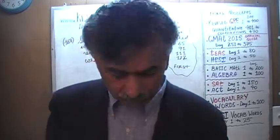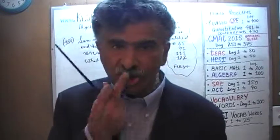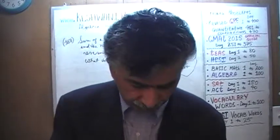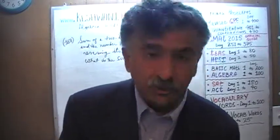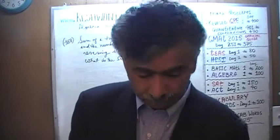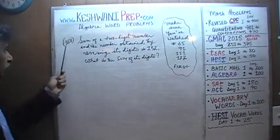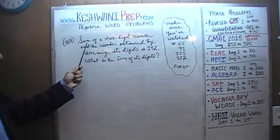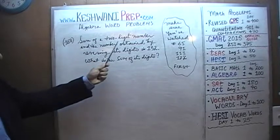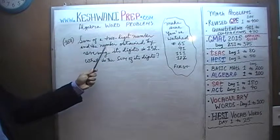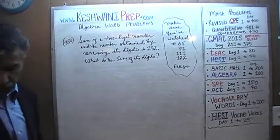Today we'll do problem number 168. The problem, as you can see, is already on the blackboard. 168. It says the sum of a two-digit number and the number obtained by reversing its digits is 132.